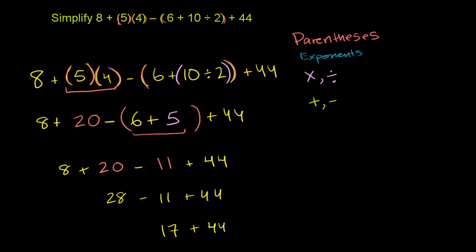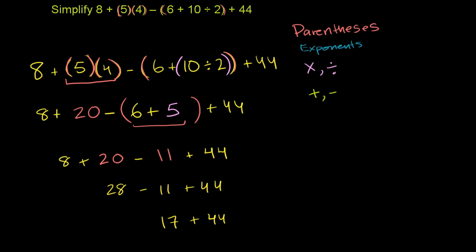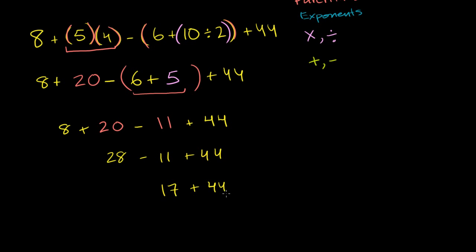And then 17 plus 44, I'll scroll down a little bit. 17 plus 44. 7 plus 44 would be 51. So this is going to be 61. And we're done.